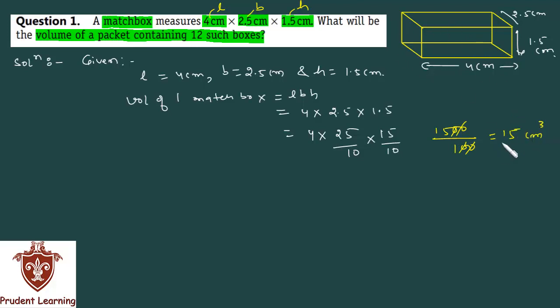Volume of 1 matchbox is 15 cm cube. Now, volume of the packet containing 12 matchboxes is equal to 12 times the volume of 1 matchbox.